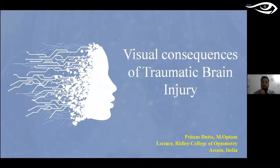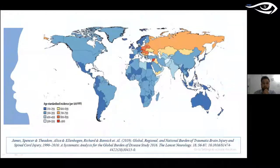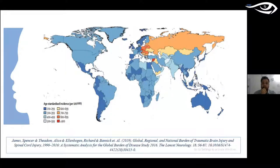Traumatic brain injury, which we generally call TBI, is a global public health concern. If you look at the global incidence rate, the map shows that higher colors represent maximum incidents and lower colors represent minimum incidents, varying from place to place around the world. This illustrates the severity and global incidence rate of TBI.